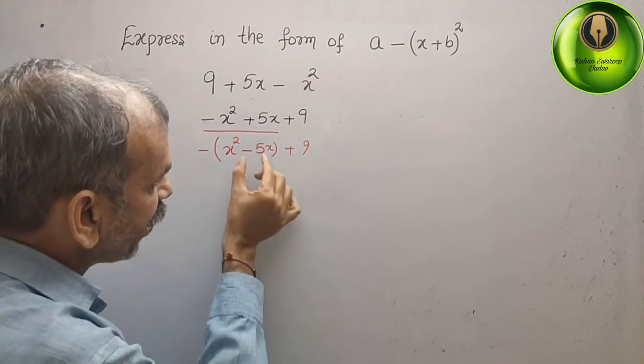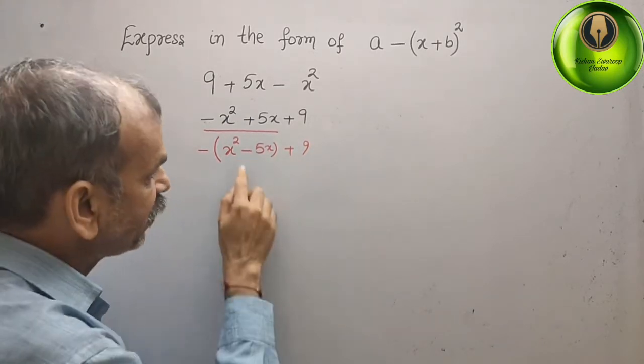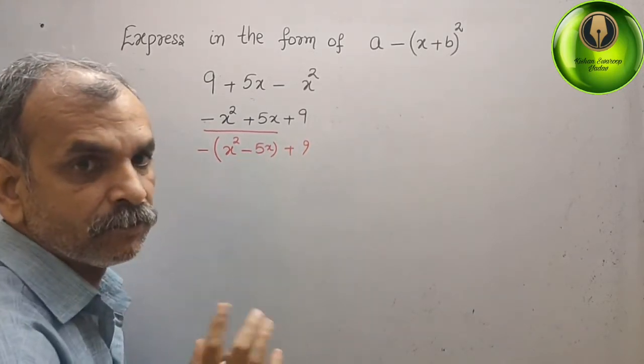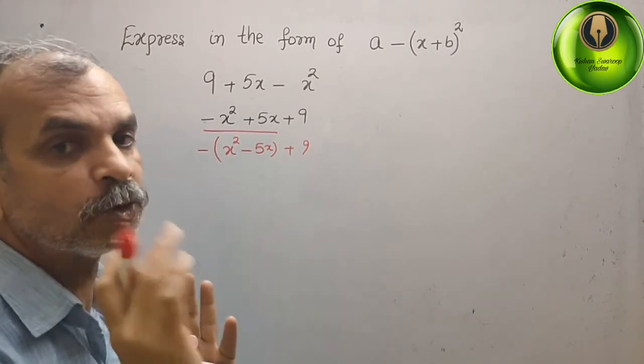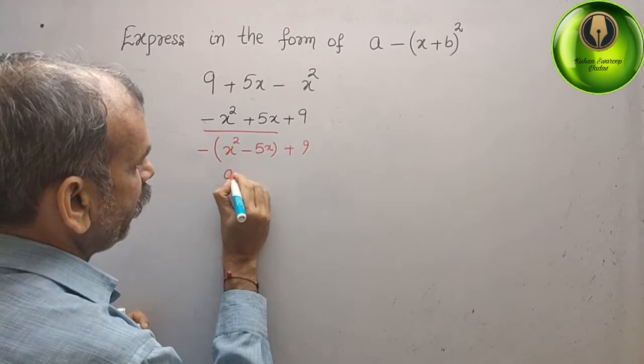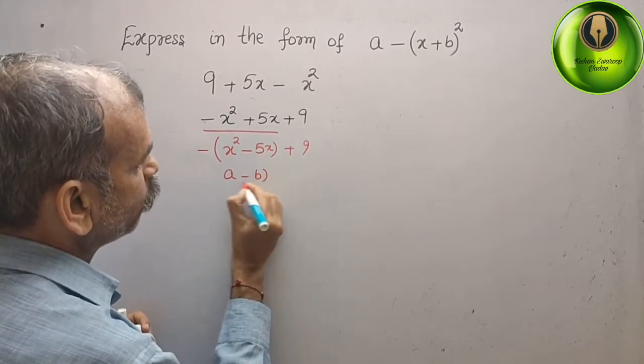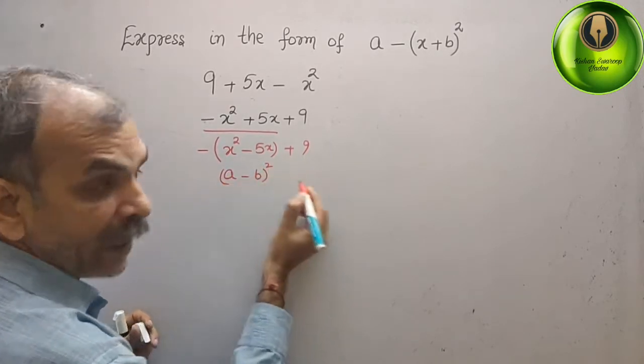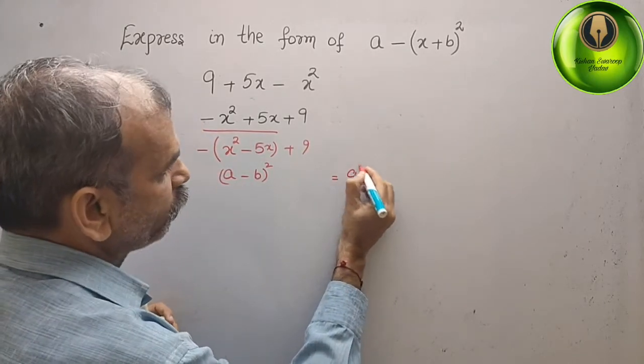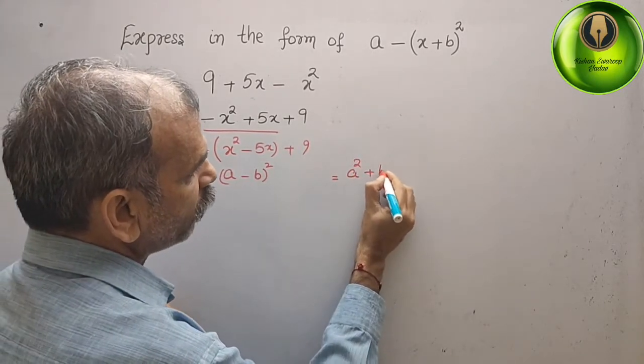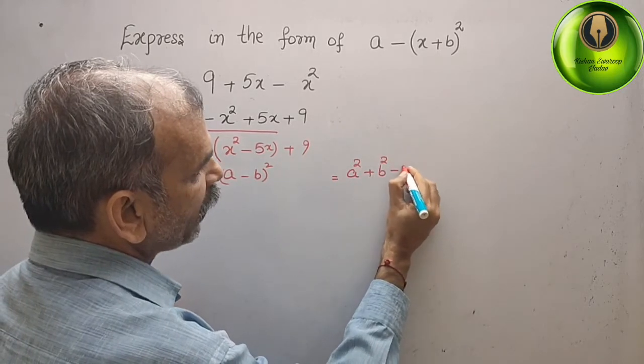Now, whatever is there in the bracket, by seeing this, this is minus. We will make it as minus a minus b whole square. a minus b whole square. That is equal to what? a square plus b square minus 2ab.